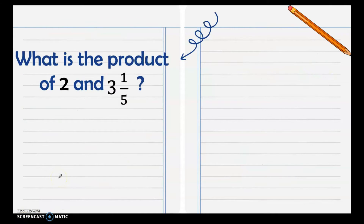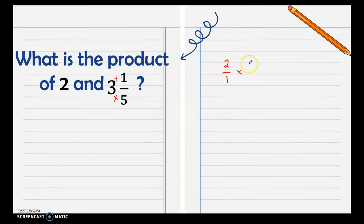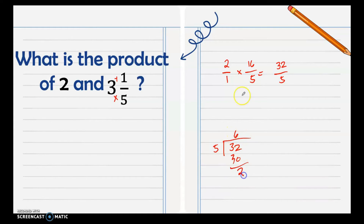Let's have more examples. What is the product of 2 and 3 and 1/5? If the given is a whole number, put 1 as the denominator. If the given is a mixed number, change it to an improper fraction by multiplying the denominator and the whole number and adding it to the numerator: 5 times 3 is 15, plus 1 is 16, copy the denominator 5. Then multiply: 2 times 16 is 32, over 5. Since it's improper, change it to a mixed number: 6 remainder 2, so our answer is 6 and 2/5.